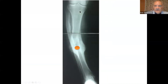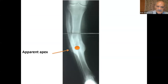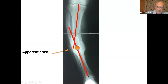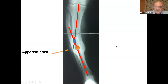In this example, we have a diaphysial apex of the deformity — it's clear. Look to the apparent CORA. So if you draw the mechanical or anatomical axis of the proximal tibia and the anatomical axis of the distal tibia, they are not going to meet at the apparent apex; they are going to meet away from the apparent apex. That means we have another CORA. So this is the apparent apex, and this is the real CORA — the CORA lies away from the apparent apex.